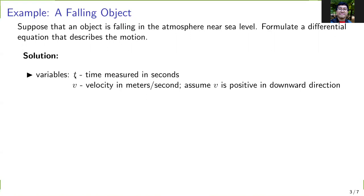We assign t as the time measured in seconds, v for velocity in meters per second. For now, let's assume v is positive in the downward direction.